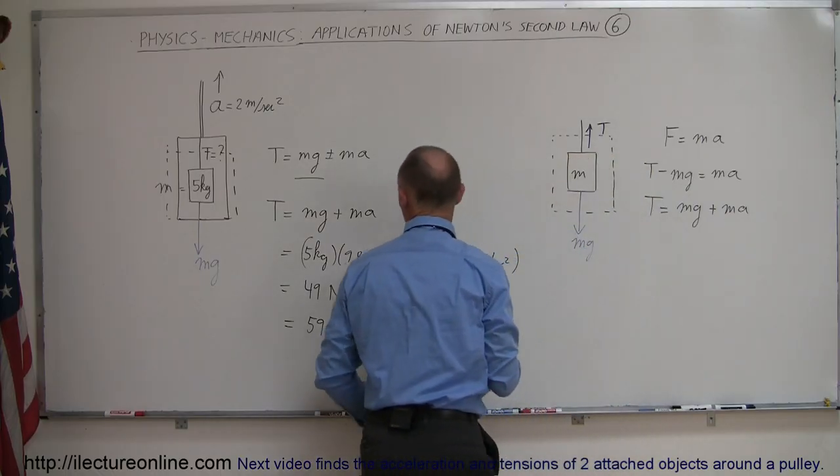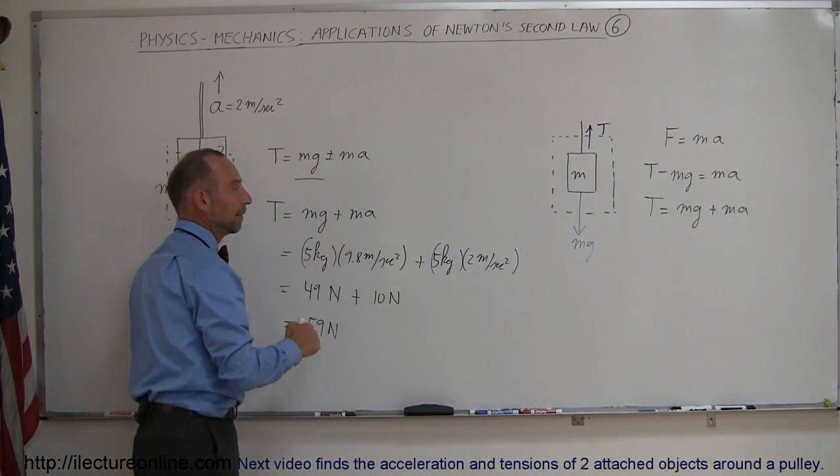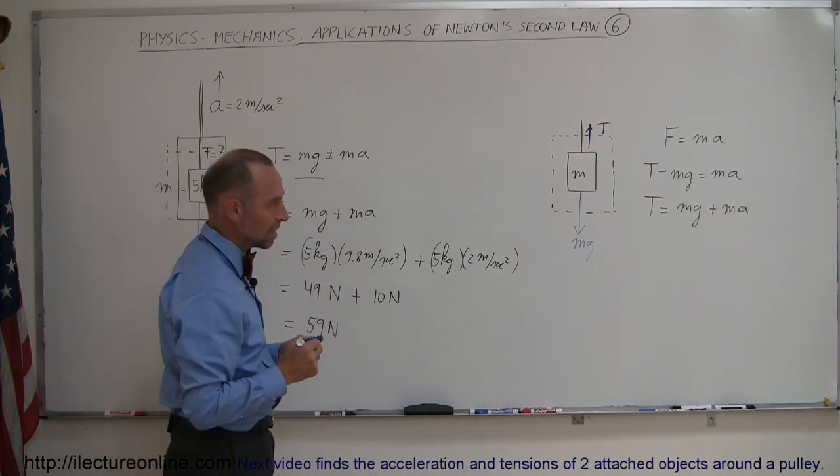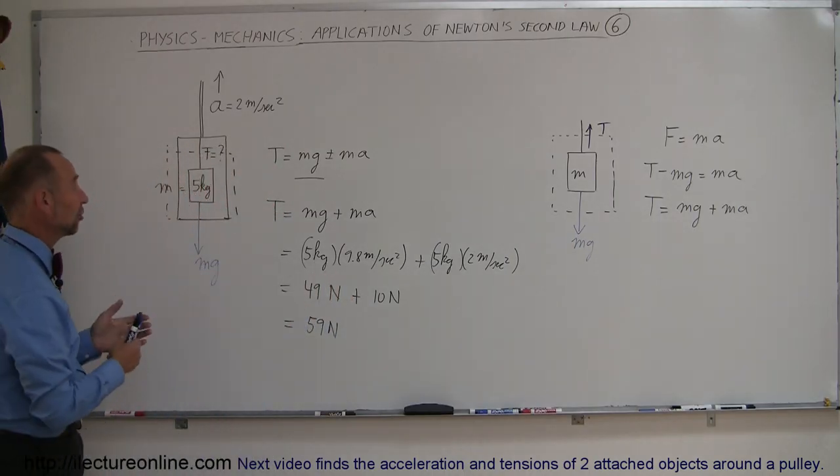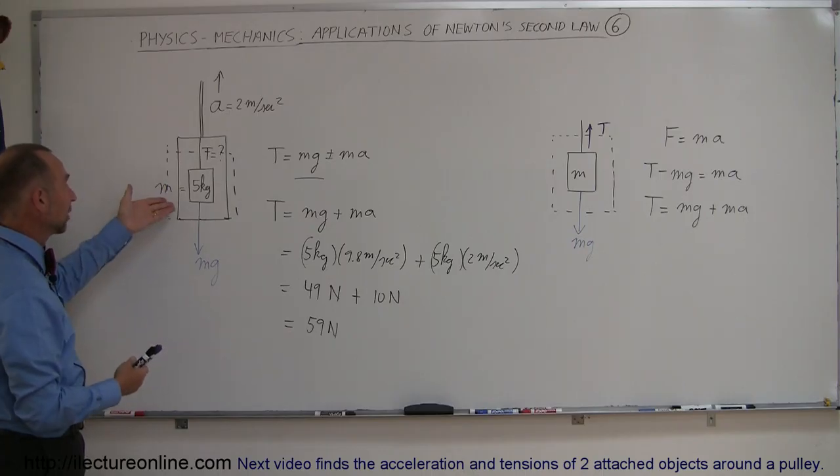which, of course, gives us the exact same equation that we had over there, but simply using the free body diagram method to do so. So here you can see how we can easily find the tension in a string for an object either being accelerated upward or being accelerated downward.